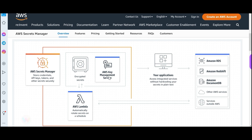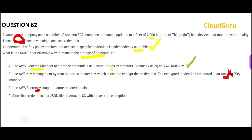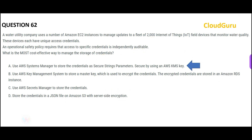Secrets Manager also has a problem — it is not independently auditable, and we want independent auditability. Option D says store the credentials in a JSON file in S3. Even though they use server-side encryption, this is a very crude way of storing things. So there are two crude options: B stores in RDS, D stores in a JSON file in S3. My answer is A.